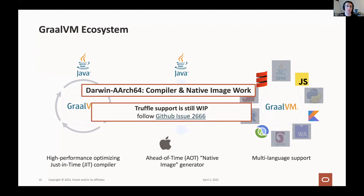For macOS, currently the compiler and native image work on ARM. For the next release coming out later this month, 22.1, we will make experimental downloads available for Darwin AArch64. On the Truffle side, we still need to add some things for Sulong to support Darwin's native application binary interface, so most Truffle languages don't work yet. Support for that should come soon — we're actively working on it. If you're curious about following the progress in macOS compatibility, you can follow the GitHub issue linked in the slides.